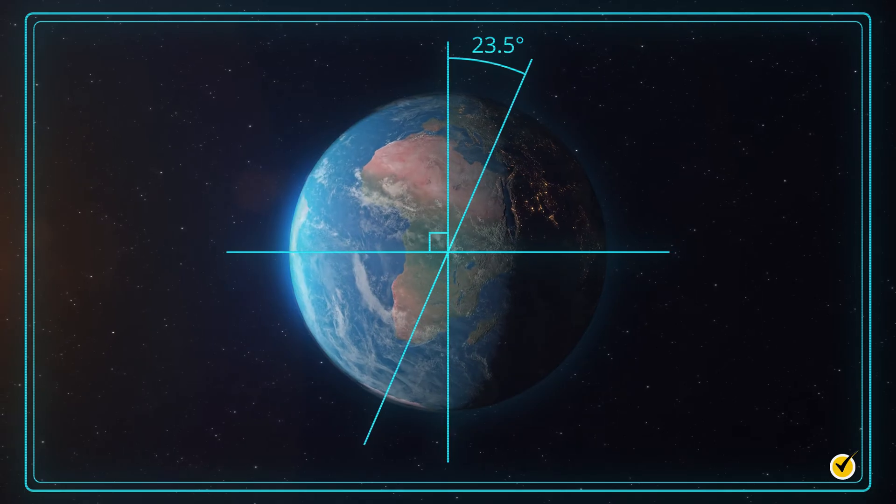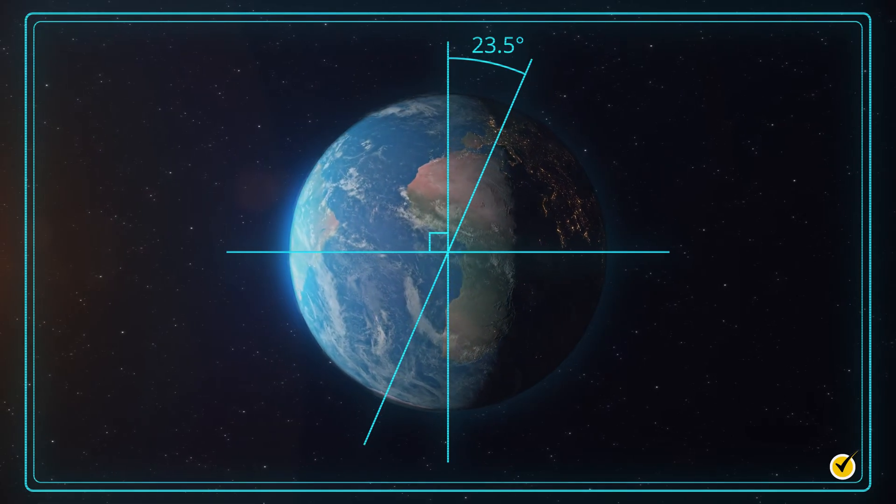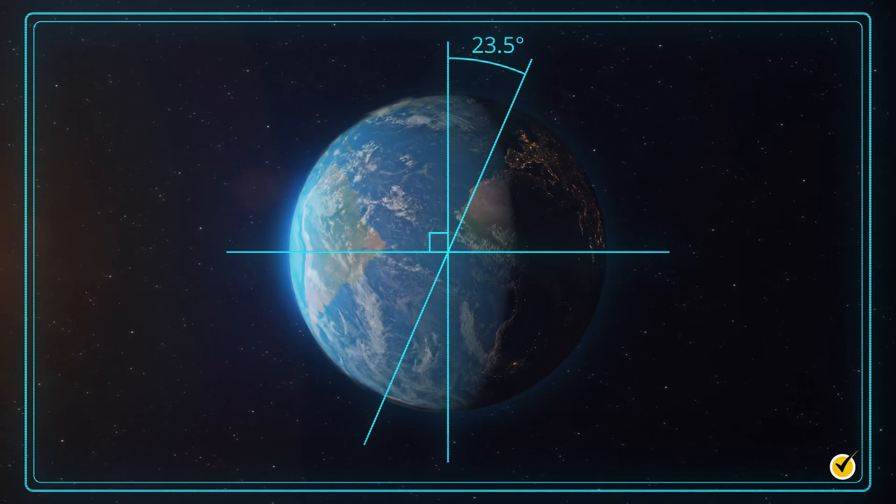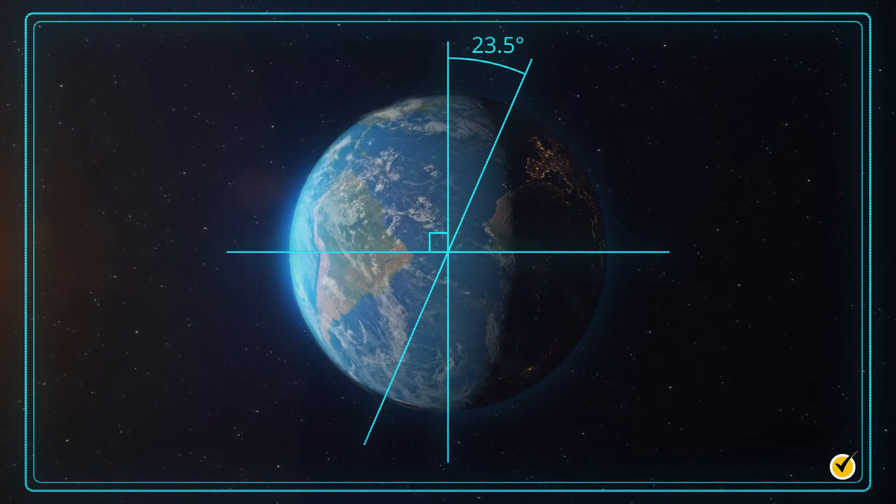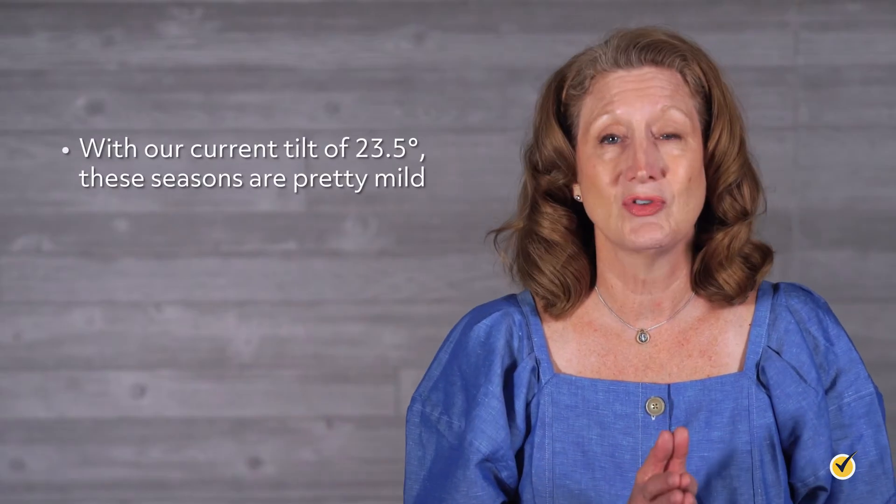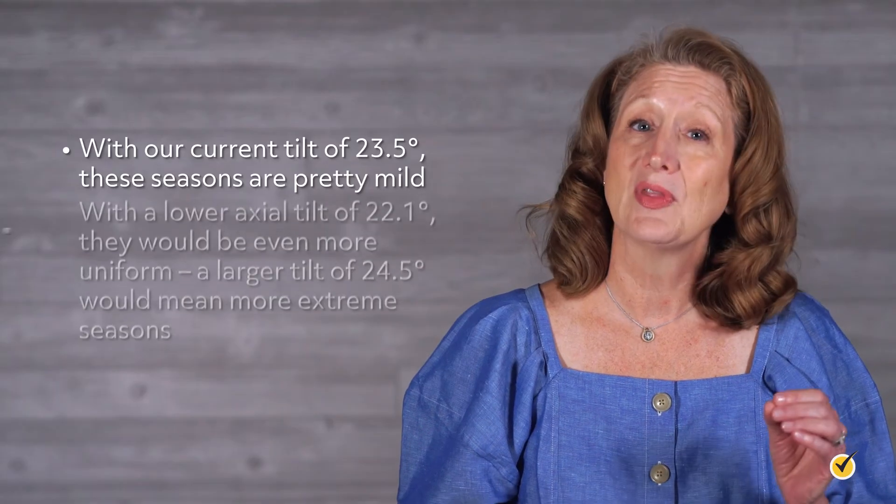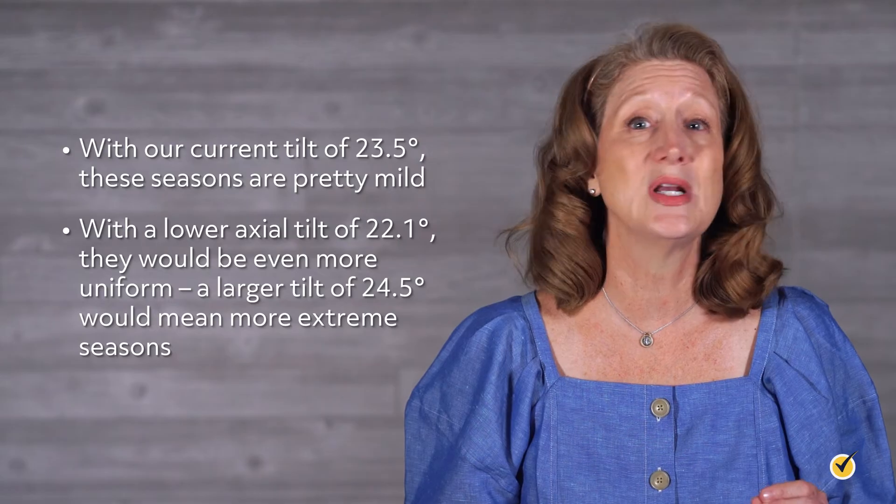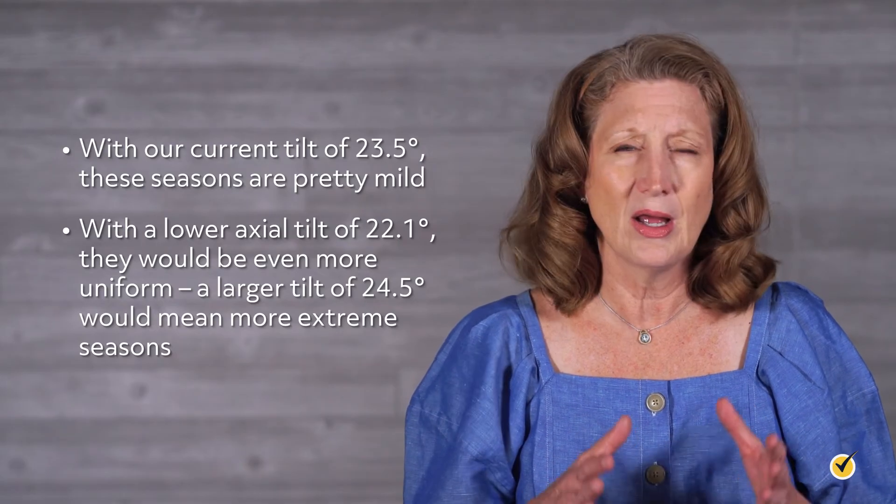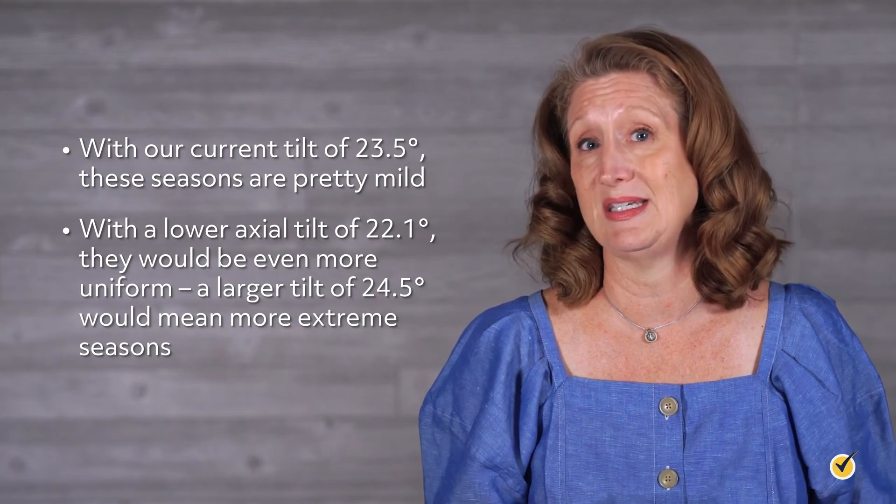You might have heard before that Earth's tilt is what allows our planet to have different seasons. If you're in the Northern Hemisphere, you'll have winter when it's cold, summer when it's hot, and spring and fall in between. With our current tilt of 23.5 degrees, these seasons are pretty mild. With a lower axial tilt of 22.1 degrees, they would be even more uniform. A larger tilt of 24.5 degrees would mean more extreme seasons.